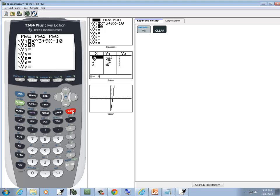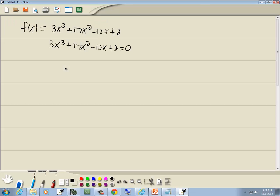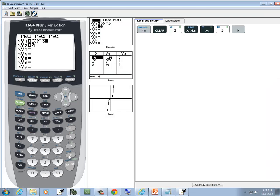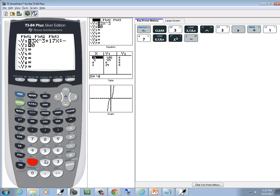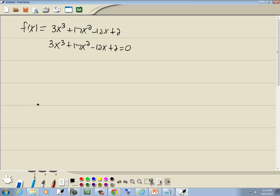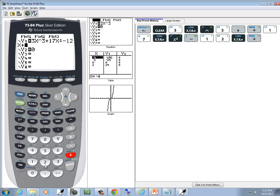So I'll press y equals, press clear. We've got 3x to the third, so 3x carat 3. If you've got a new TI-84 be sure you do a right arrow key to get out of the exponent mode. Plus 17x squared minus 12x plus 2, and then down arrow to y2 and put zero in.